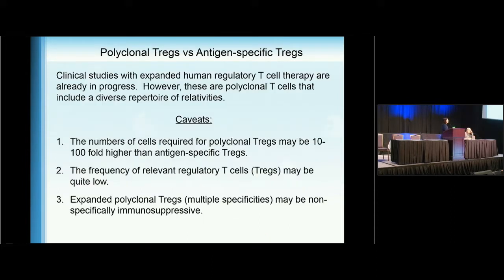There are advantages to using polyclonal nonspecific Tregs because you don't have to manipulate them, and they are also being used in clinical studies. However, there are caveats: the number of cells required for polyclonal Tregs may be 10- to 100-fold higher than antigen-specific Tregs, as estimated from autoimmune disease studies. The frequency of relevant regulatory T-cells may be quite low, and expanded polyclonal Tregs could be nonspecifically immunosuppressive, raising safety concerns.